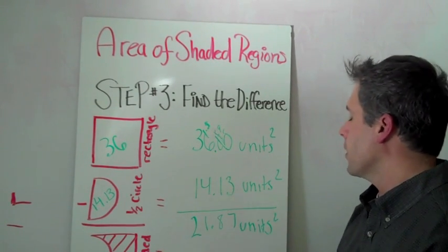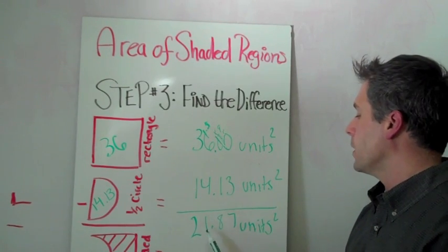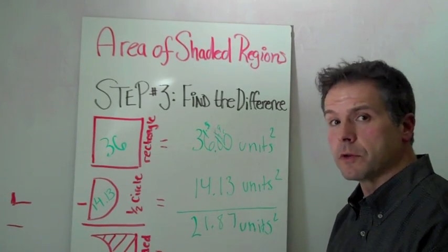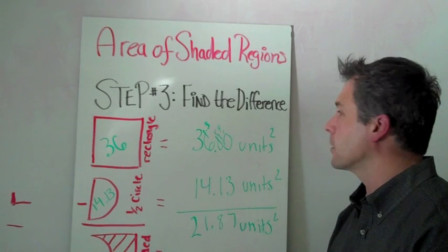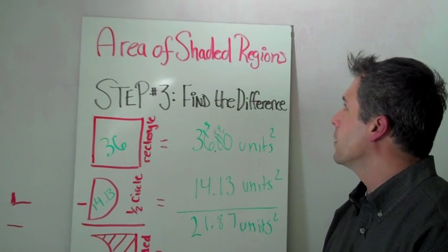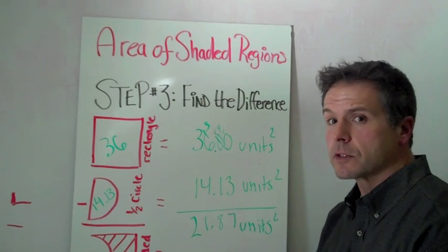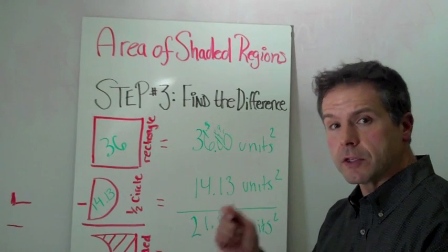So the area of our shaded region is 21.87 units squared. Pretty cool. I like these problems - finding the area of the shaded region. Once again, let's go over the steps. The first step was identify the shapes.